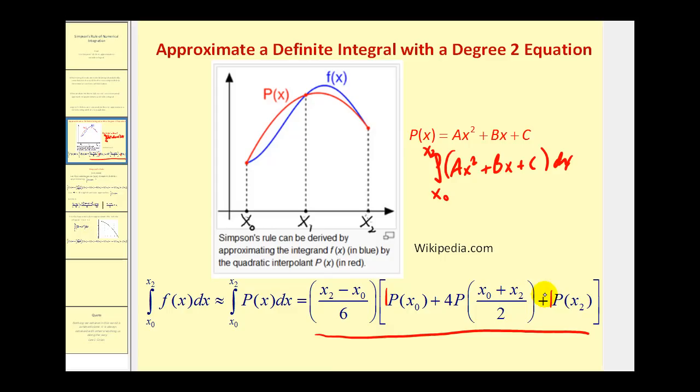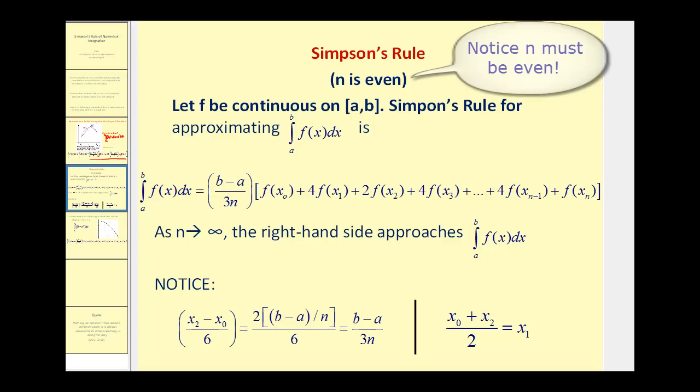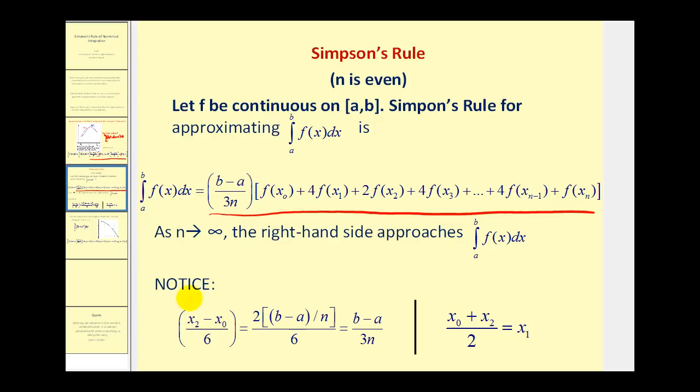We can approximate this definite integral using Simpson's Rule. On the previous screen, we had x sub two minus x sub zero divided by six, instead of b minus a divided by three n. Remember that x sub two minus x sub zero spanned two intervals, where each interval has a length of b minus a divided by n. So if we take the width of one interval and multiply it by two, it equals x sub two minus x sub zero. The two and the six simplify, giving us b minus a divided by three n.